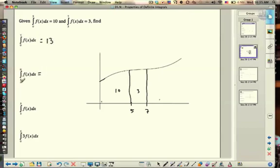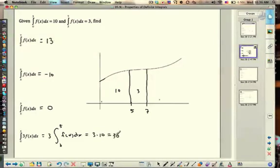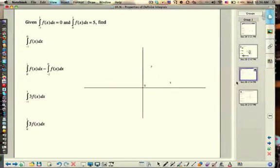From 5 to 0 should be negative 10, so it's the opposite. From 5 to 5, that's no area there. And then 3 times f of x from 0 to 5. But that's the same as 3, bring the 3 out in front, 0 to 5 of f of x dx. And then this is 0 to 5 plus 10. So this is 3 times 10 which is 30.